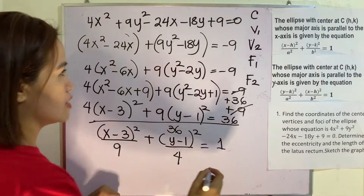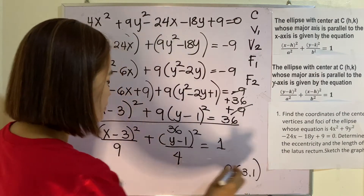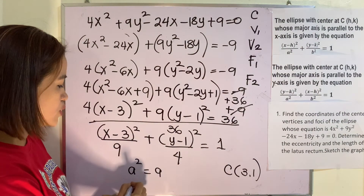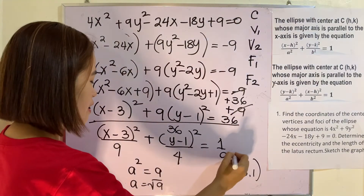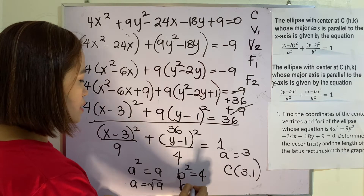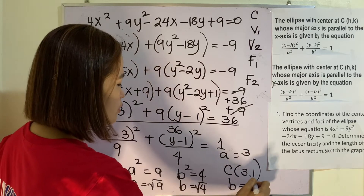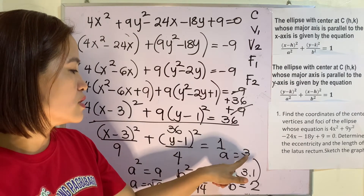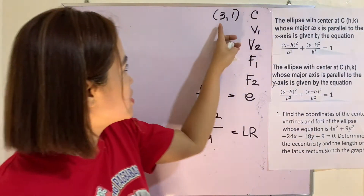After that, we can identify our values. Our center C is (3, 1). Our a squared is equal to 9, so our a is the square root of 9, which is 3. Our b squared is equal to 4, so our b is the square root of 4, which is 2. So the length of the semi-major axis is 3, and the length of the semi-minor axis is 2.